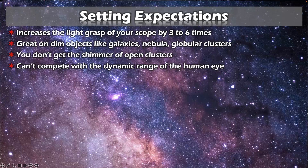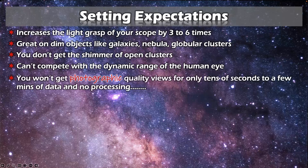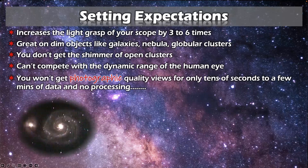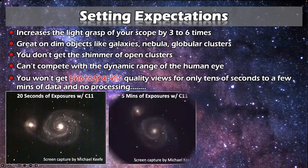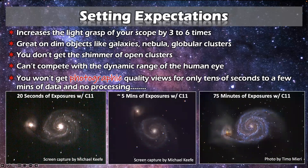With something like Jupiter, you're either going to see Jupiter and lose the moons, or extend the exposure to see the moons and Jupiter is completely blown out. For planetary viewing, I always go visual and don't even bother with EAA. And you're not going to get photographic-quality views with only a few tens of seconds to maybe just a few minutes of data and no processing. Here's an example with my very first camera — 20 seconds of integration on the Whirlpool versus about five minutes of stacked views with my current camera.